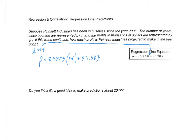We get P equals 8.9773 times T, which is 14, plus 95.583. And if you plug this into your calculator, you get 221.2652. Now remember, the profit is in thousands of dollars, so they're not profiting $221 — they're profiting $221,265.20. When you multiply by 1000, the decimal place moves three times to the right.